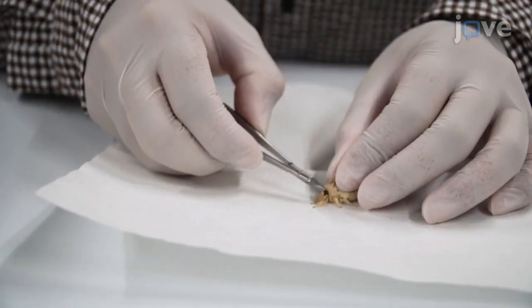Isolate silkmoth antennae using post-mortem scissors and cut both sides of the antennae.